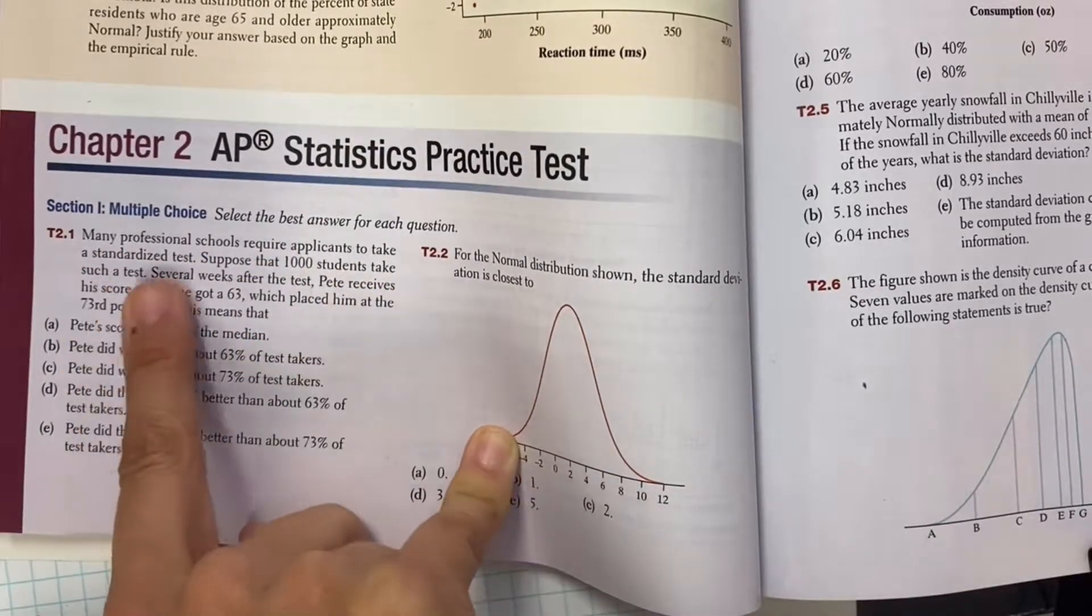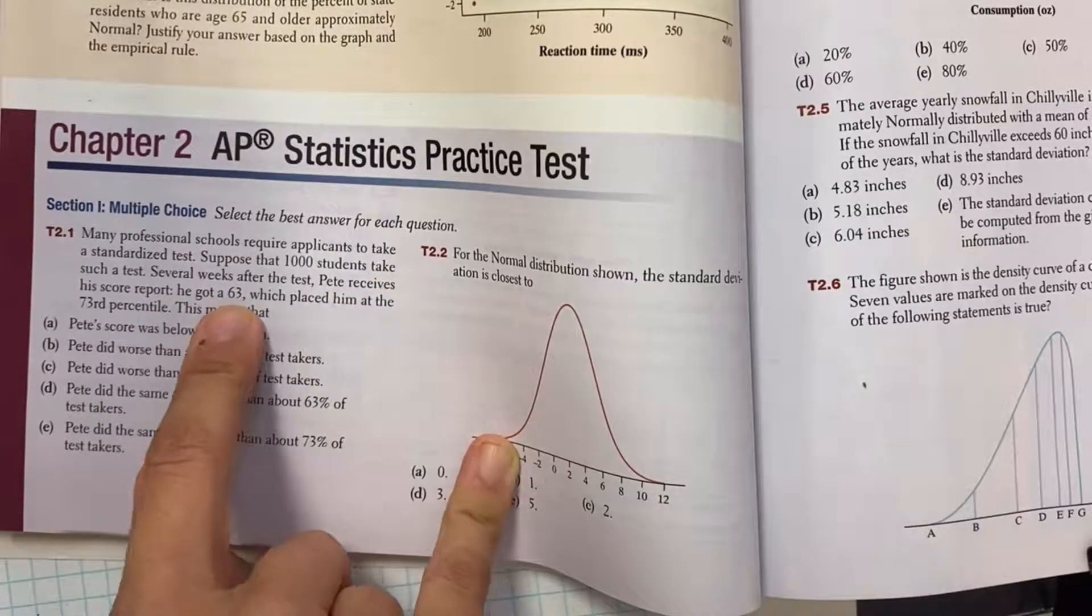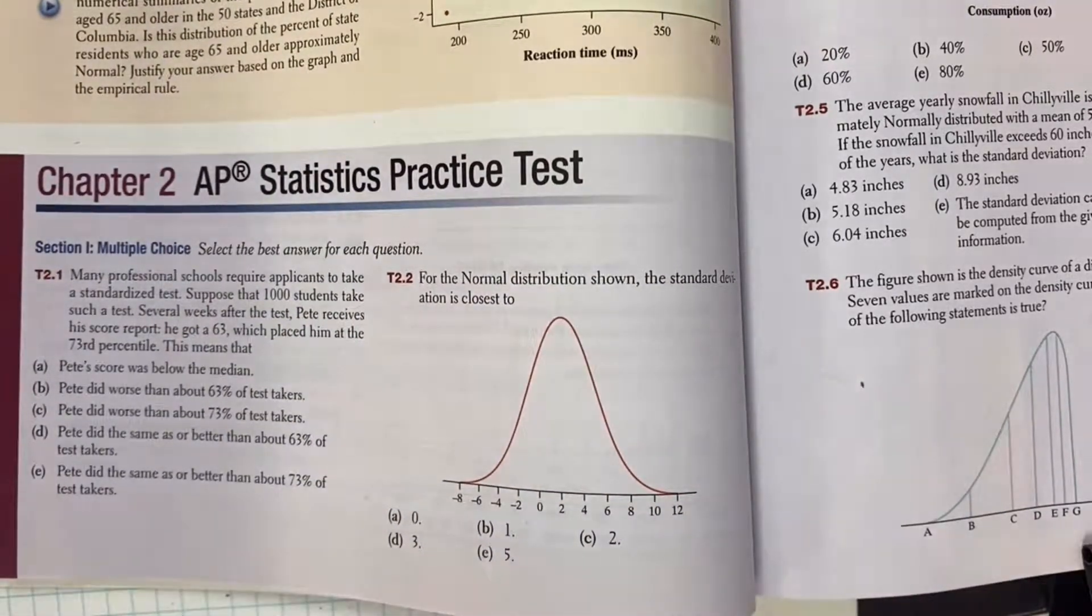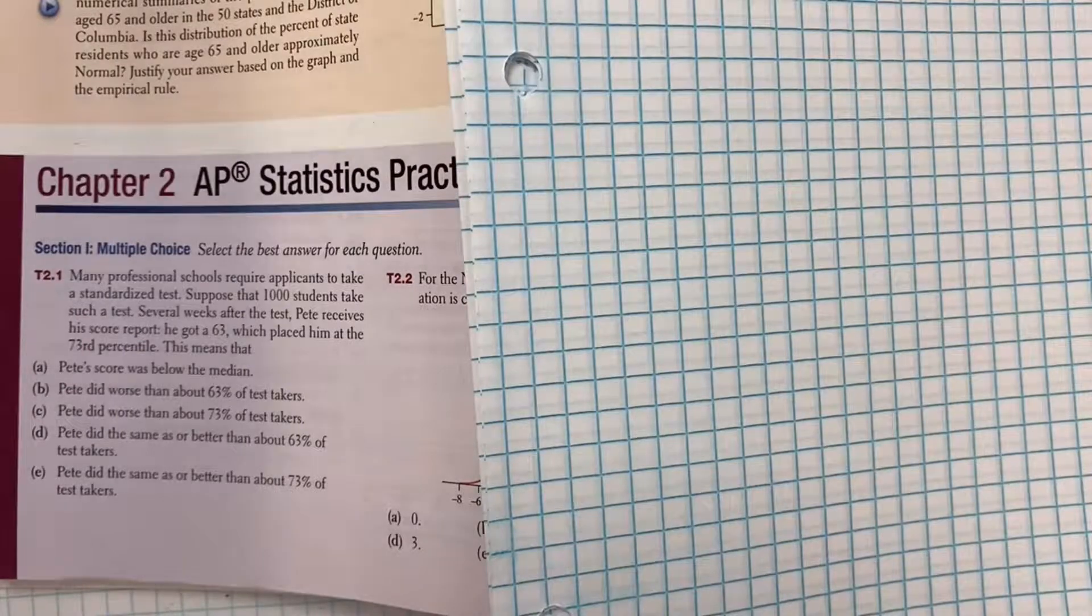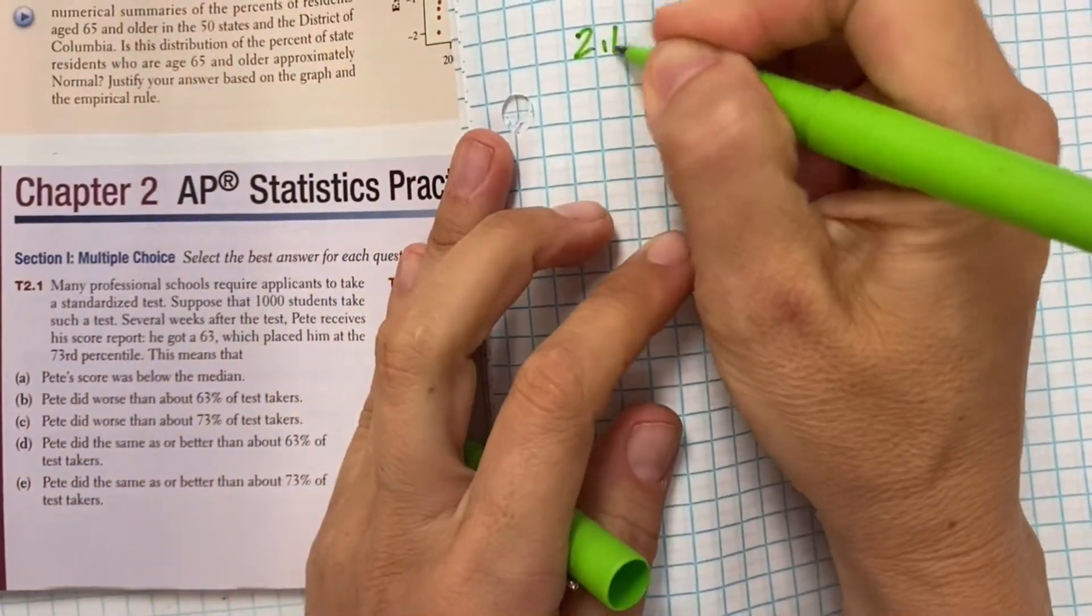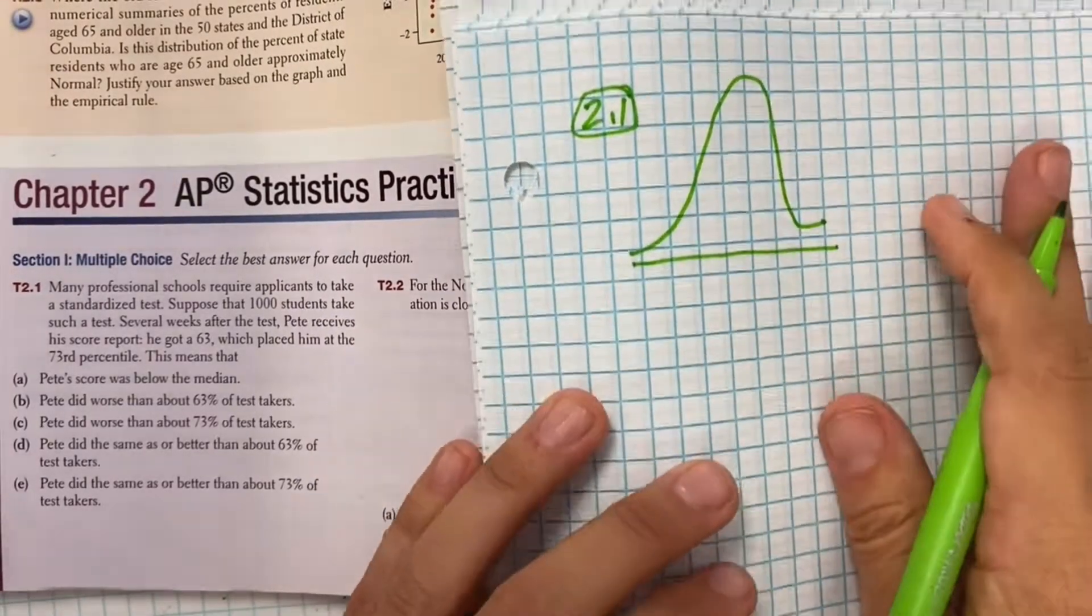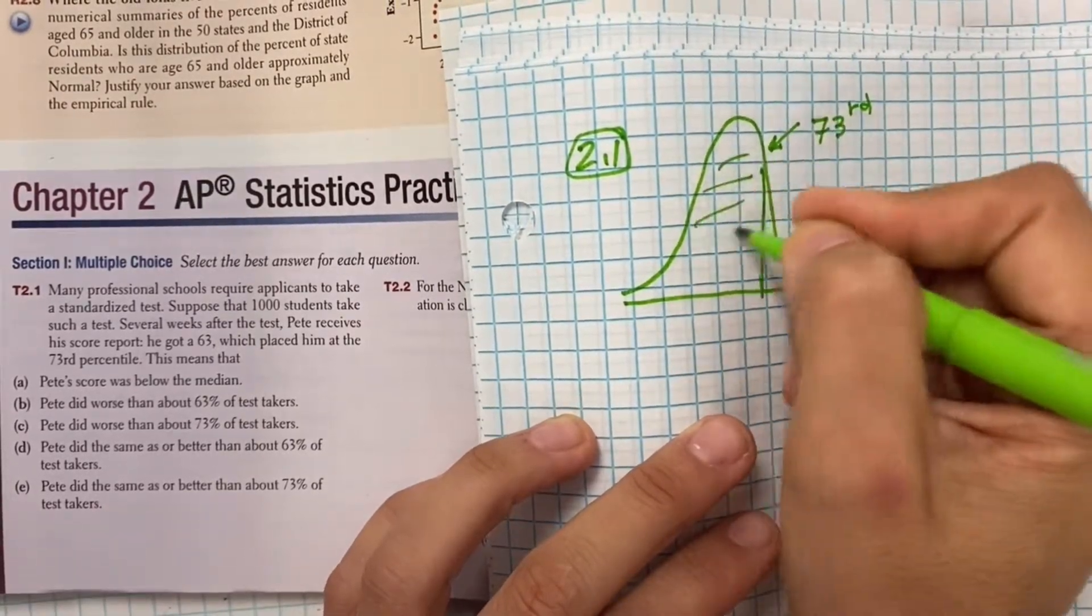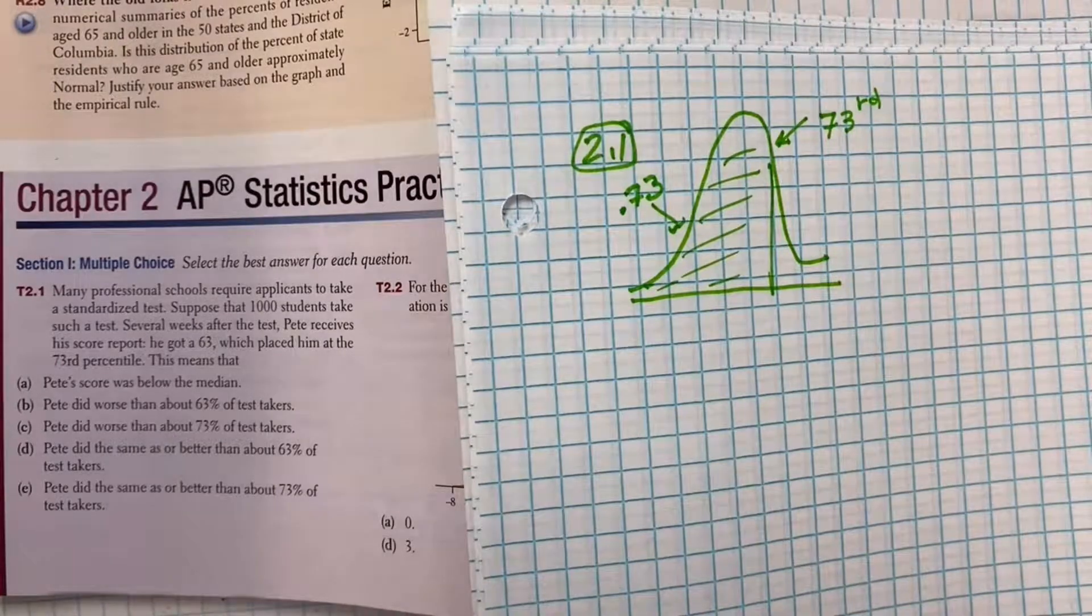Many professional schools require applicants to take a standardized test. Suppose that a thousand took the test. Several weeks later, Pete got his score. He got a 63. This put him in the 93rd percentile. If I was trying to answer this question and wasn't sure if I'd get full credit, I would do the types of things that we did in class to show our work.